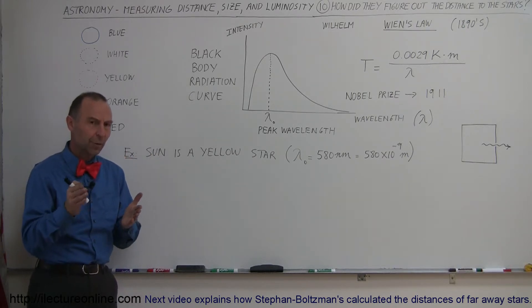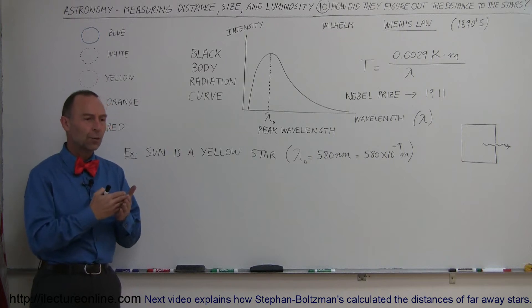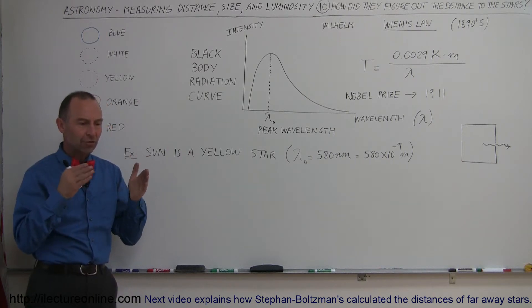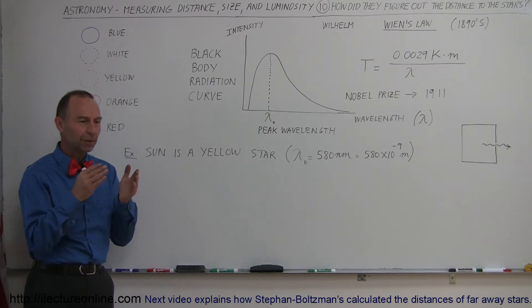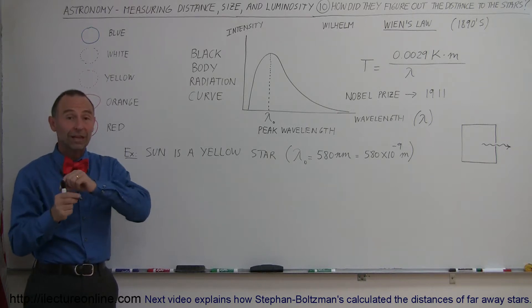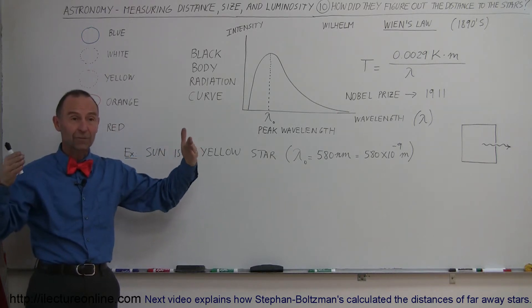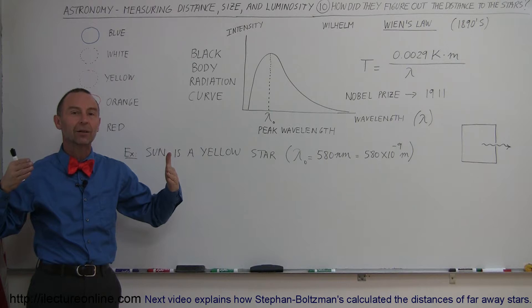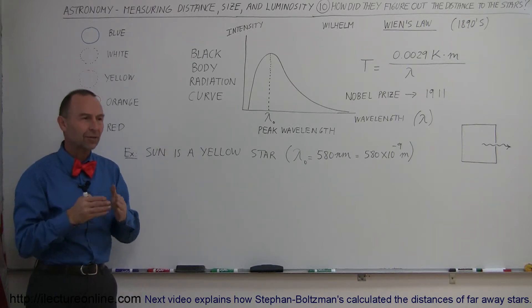If you remember in the previous video, we found out how they were able to measure the distance to the nearest hundred stars or so. By measuring the position of the stars from various vantage points in the Earth's orbit, we could actually measure a difference in that angle, which was then known as the angle of parallax, which enabled us to find the distance to those stars.